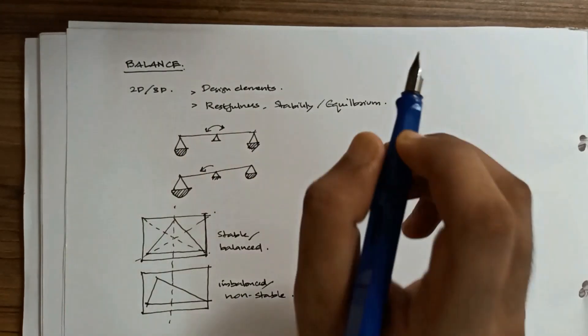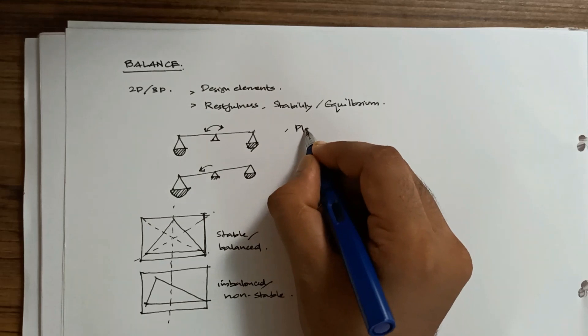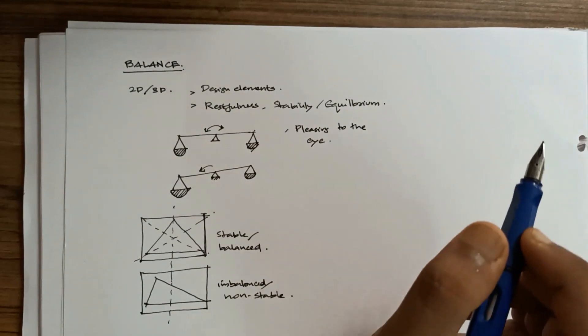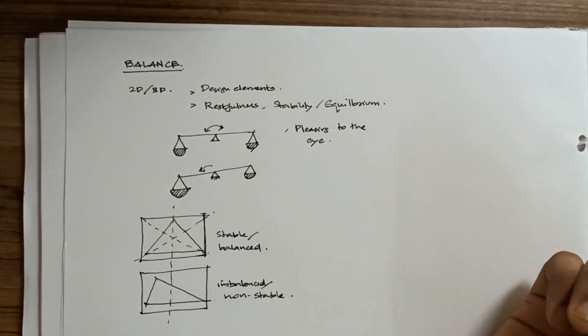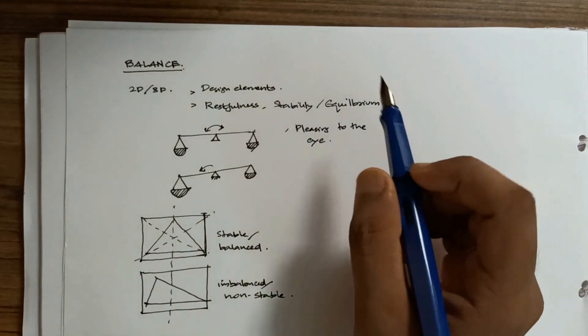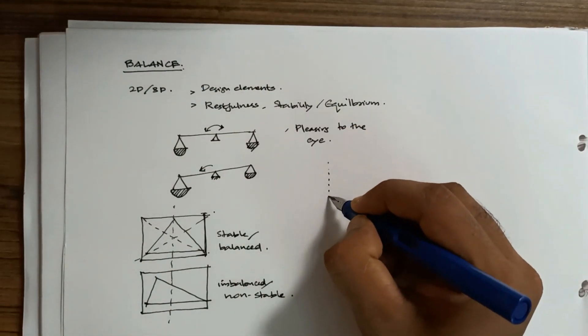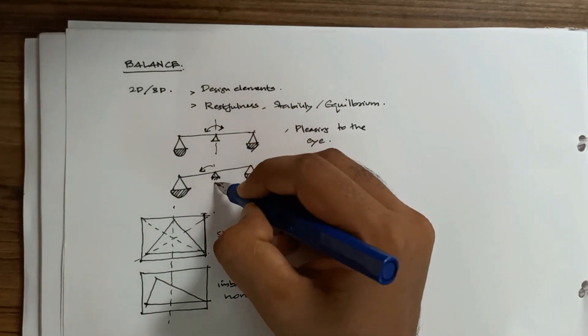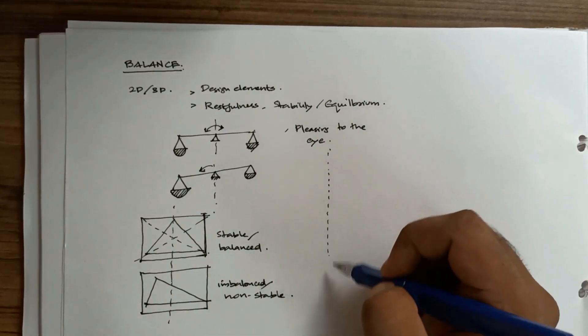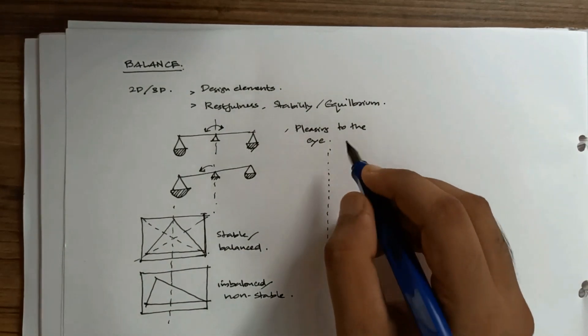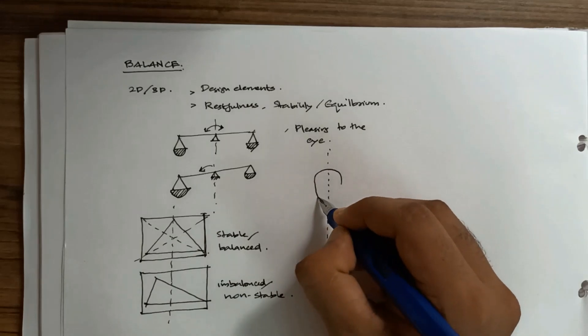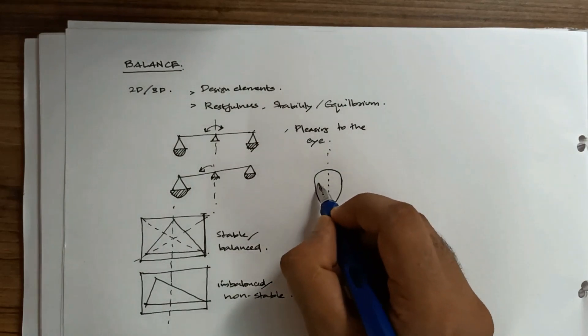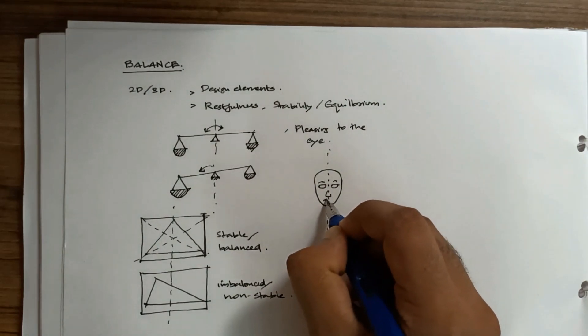A balanced composition will always be pleasing to the eye. One important example of balance is the human face. Whenever we discuss balance we always define it with respect to an axis. In the human face we have an axis right through the center of the forehead, so human face is also a balanced composition. We have eyes on one side, eyebrows on one side, the nose and the mouth.